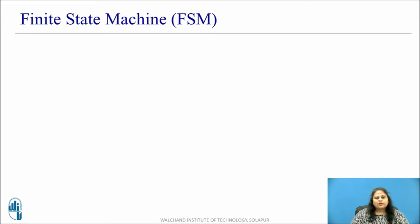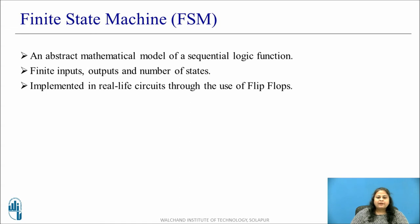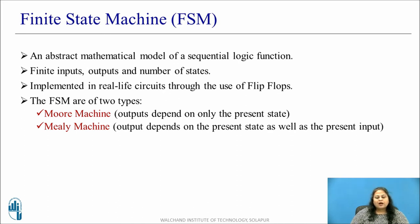Let us now discuss what a finite state machine is — popularly known as FSM. A finite state machine is an abstract mathematical model of a sequential logic function. It has finite inputs, outputs, and number of states. The basic idea of FSM is to store a sequence of different unique states and transition between them depending on the value of the inputs and the current state of the machine. They are implemented in real-life circuits through the use of flip-flops. Depending on how output is obtained, FSMs are classified into two types: the Moore machine model and the Mealy machine model.